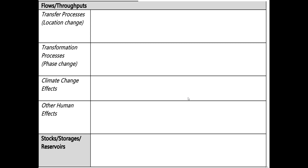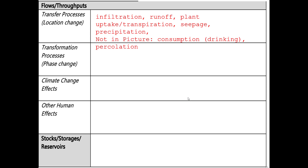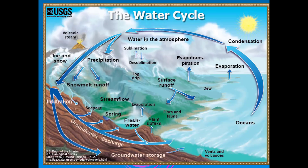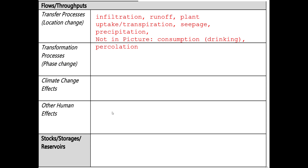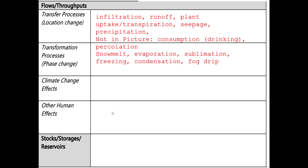Transfer processes — words that indicate change — include infiltration, runoff, plant uptake, transpiration, and percolation, which is another word for going into the ground. Consumption means drinking. For phase changes, you need to know when something is a solid, liquid, or gas: snowmelt is solid to liquid; evaporation is liquid to gas; sublimation is solid to gas, which very rarely happens here unless you're buying dry ice; freezing and condensation go from gas to liquid.